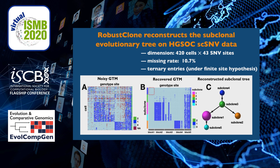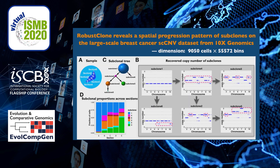We further validate RobustClone on real scSNV and scCNV datasets. First, RobustClone accurately reconstructs the subclonal evolutionary tree on HGSOC scSNV data, which contains 420 cells and 43 selected SNV sites with a 10.7% missing rate. Then, RobustClone reveals special progression patterns of subclonal evolution on a large-scale 10x Genomics scCNV breast cancer dataset, which contains 9,050 cells and 55,572 bins. Specifically, RobustClone reconstructs the evolutionary tree of subclones and obtains specific copy number variations along the evolutionary tree, as well as subclonal proportions across five sections. These results reveal the spatial heterogeneity within the tumor.